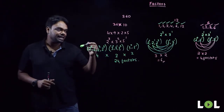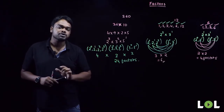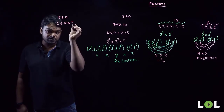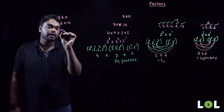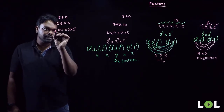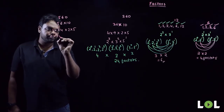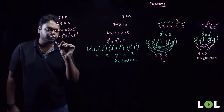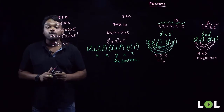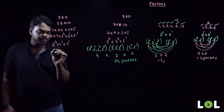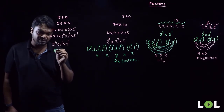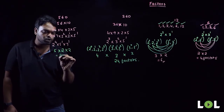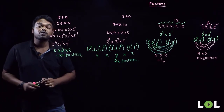For 560: written as 56 into 10 = (14 into 4) into (2 into 5) = (2 into 7) into 2 squared into 2 into 5 = 2 to the power 4 into 5 to the power 1 into 7 to the power 1. Number of factors: power 4 gives 5 numbers, power 1 gives 2 numbers, power 1 gives 2 numbers. So 5 into 2 into 2 = 20 factors for 560.